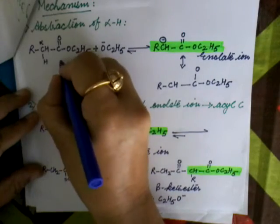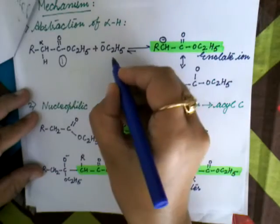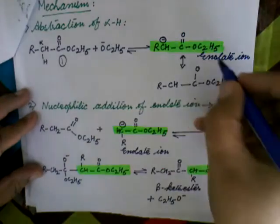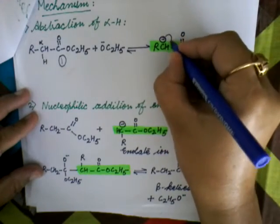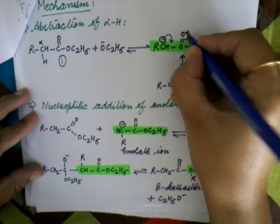In the first step, alpha hydrogen atom of one ester molecule is abstracted by ethoxide ion, and there is formation of enolate ion which is made relatively stable by delocalization of electrons.